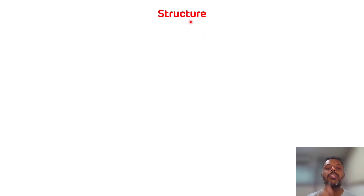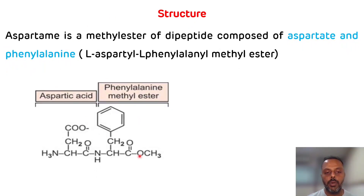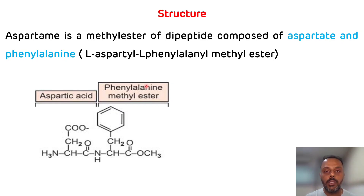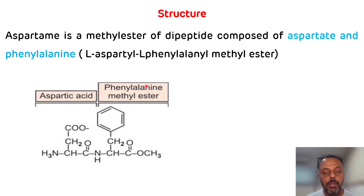Aspartame is basically the methyl ester of a dipeptide which is composed of two amino acids — aspartic acid and phenylalanine. As it is composed of two amino acids, it is a dipeptide. Aspartic acid is the sour component in the taste while phenylalanine is the bitter component, but the conjugate of these two amino acids — that is aspartame — is 200 times sweeter as compared to table sugar.